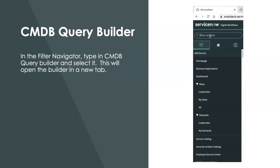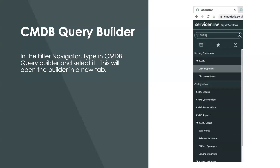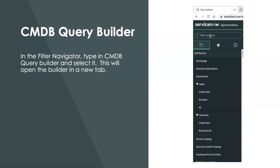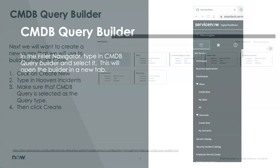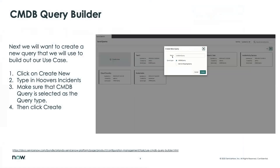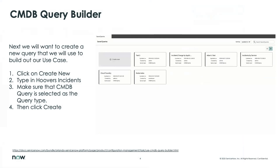The CMDB Query Builder is as simple as going to the filter navigator, typing in 'CMDB Query Builder,' and selecting it. This will open it up in a new tab. On the left side is our filter, which looks very familiar to any other search capability inside the platform. Here you can search for CIs or services, it's a hierarchy list, and you find what you want and drag it out onto the canvas.